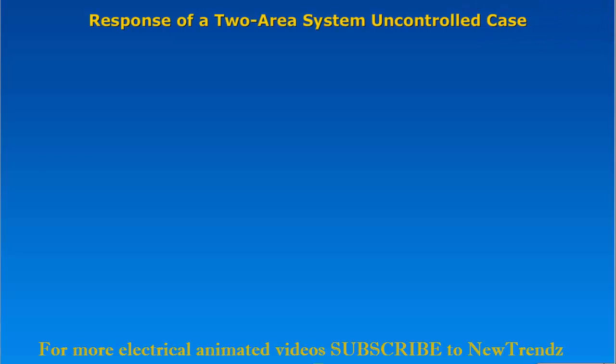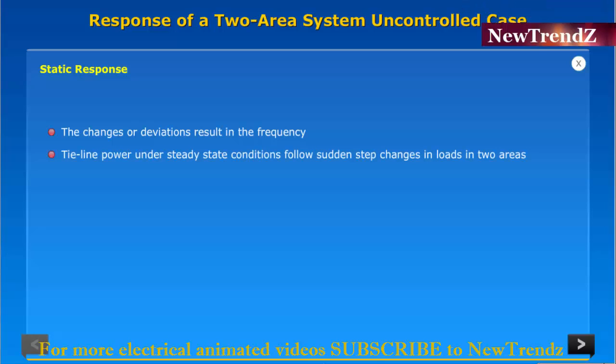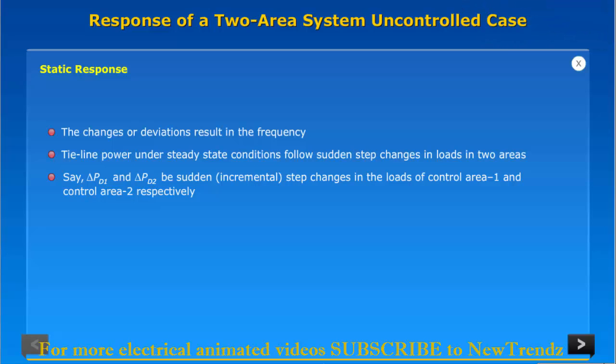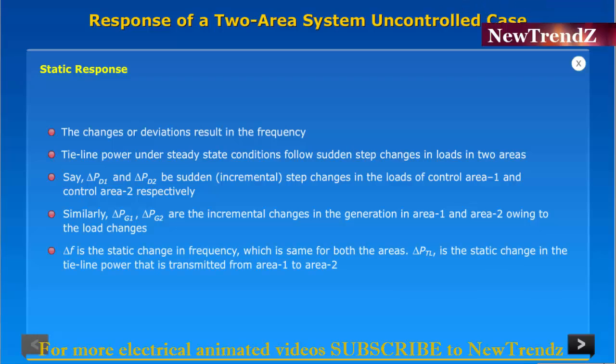Response of a two-area system uncontrolled case: static response and dynamic response. The changes or deviations result in the frequency and tie-line power under steady state conditions for sudden step changes in loads in two areas. Say ΔPD1 and ΔPD2 be sudden or incremental step changes in the loads of control area 1 and control area 2 respectively. Similarly, ΔPZ1 and ΔPZ2 are the incremental changes in the generation in area 1 and area 2 owing to the load changes. ΔF is the static change in frequency which is same for both the areas. ΔPTL is the static change in the tie-line power that is transmitted from area 1 to area 2.